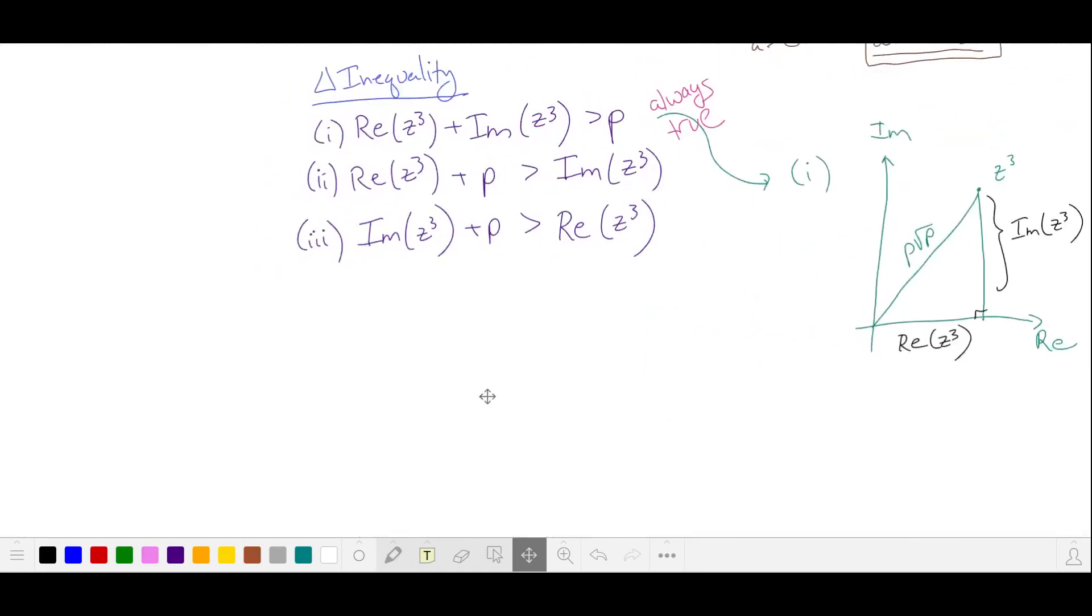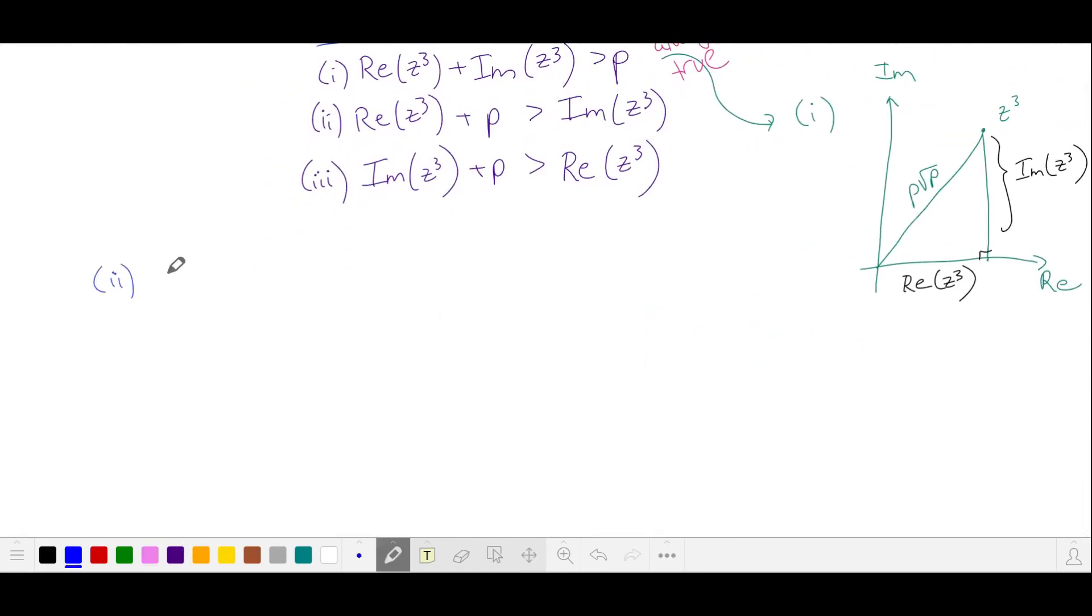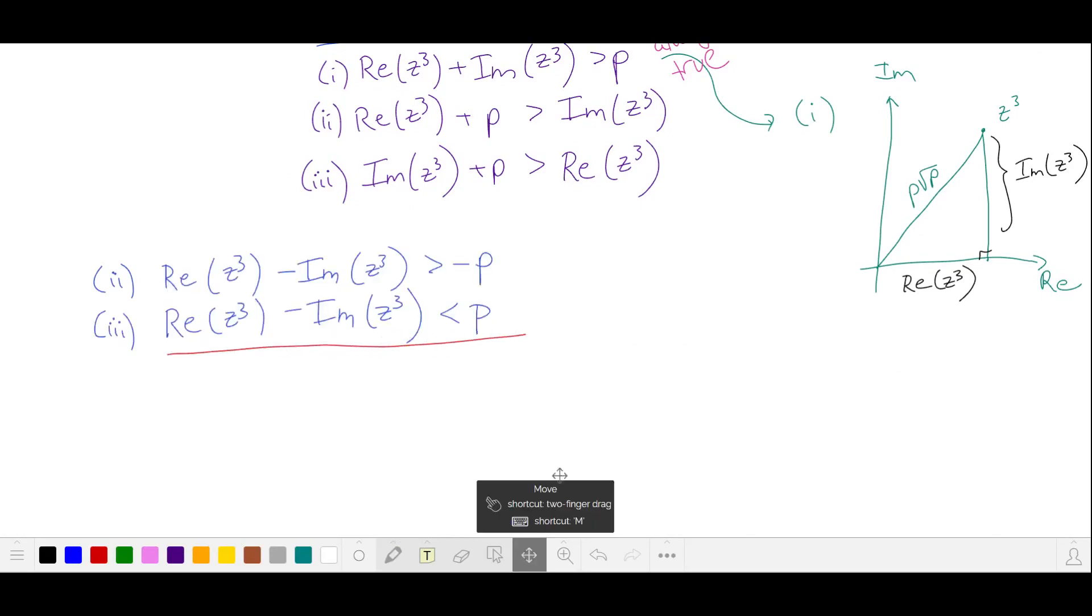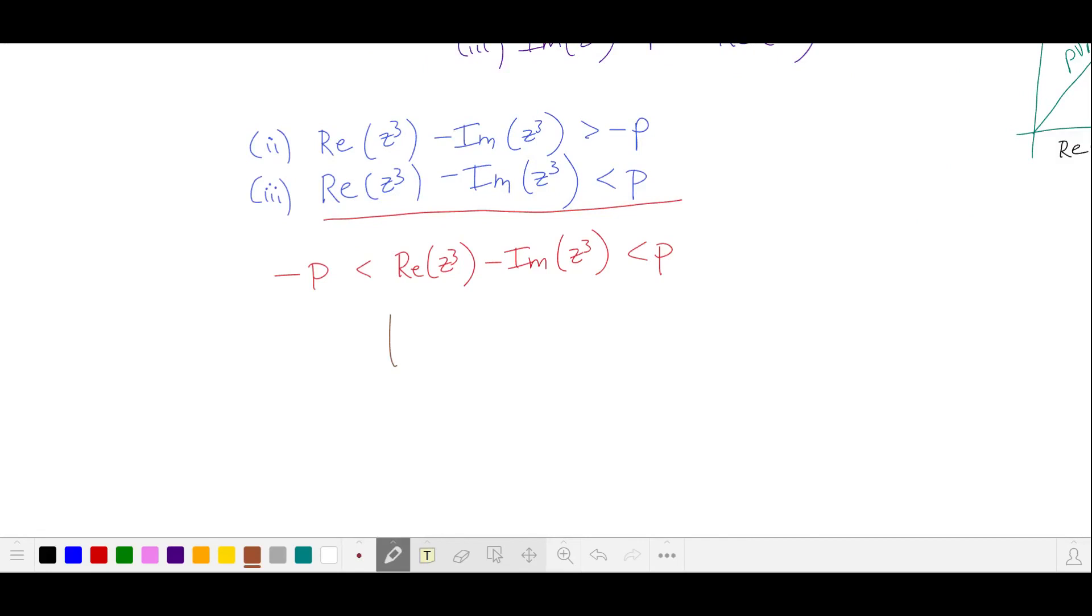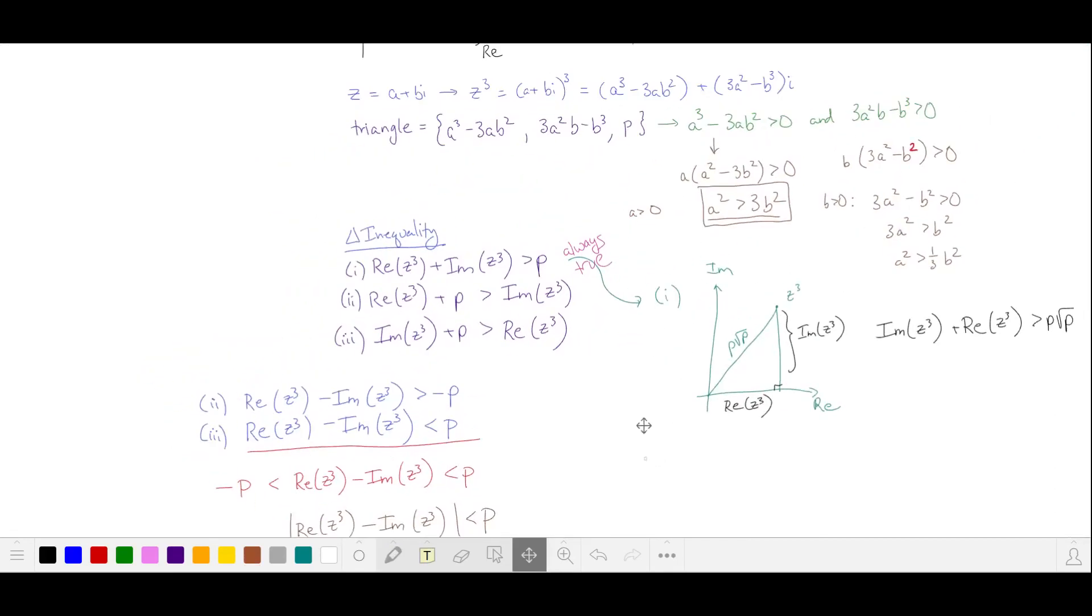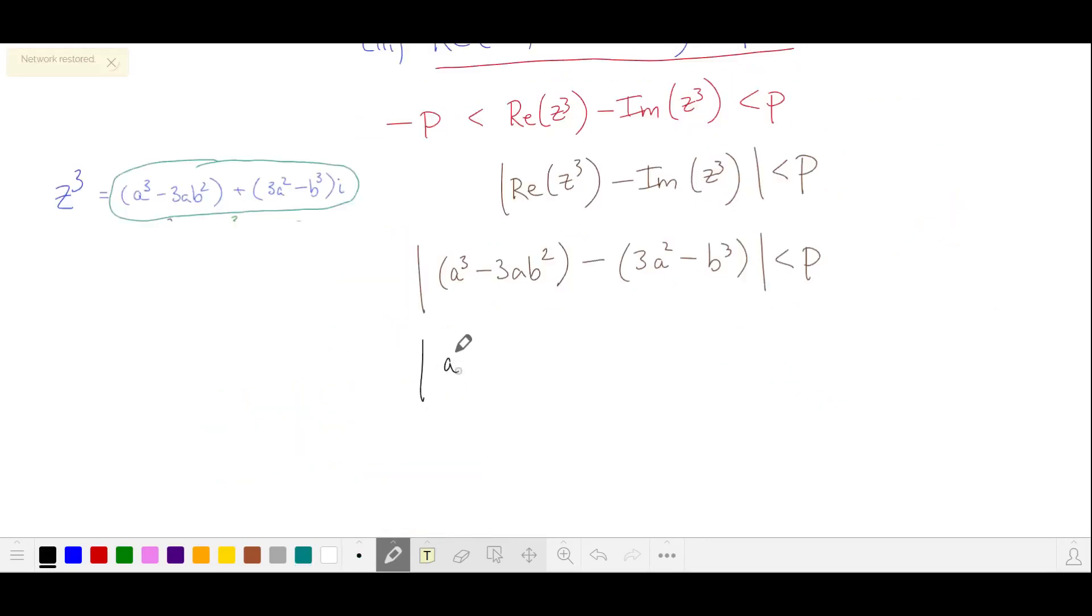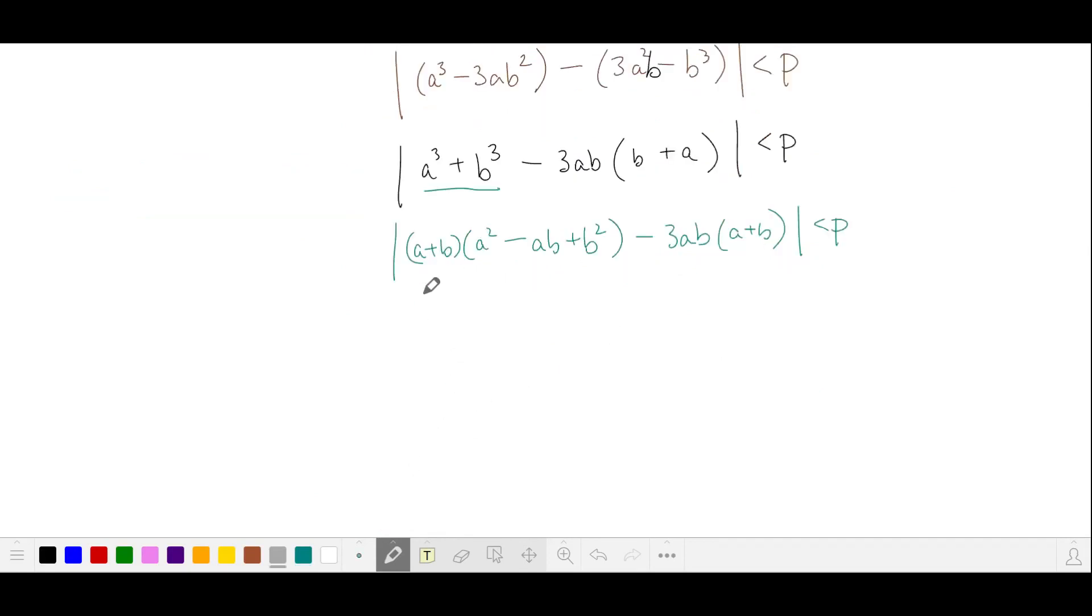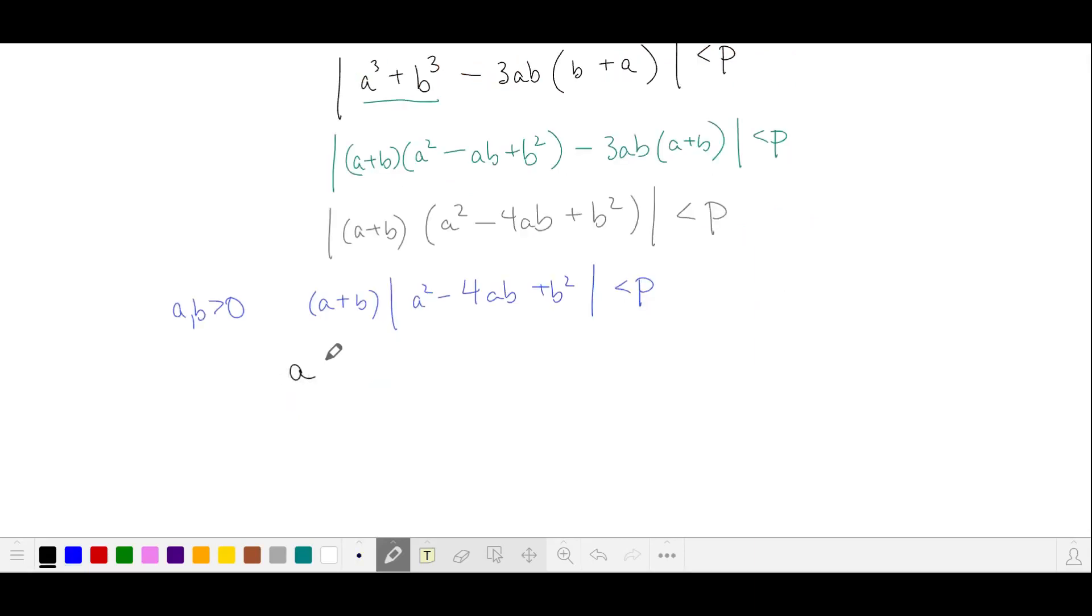Now let's take a look at our second two inequalities. Let's rewrite these, isolating the p. We'll combine these two into a chain inequality. So we can rewrite this as an absolute value, and we'll substitute our earlier values for the real and imaginary parts of z cubed. We'll rearrange the terms and factor out minus 3ab. We recognize the sum of cubes factorization and factor ab from both terms. We're still going with a and b are positive, so we'll pull out a plus b from inside the absolute value sign.